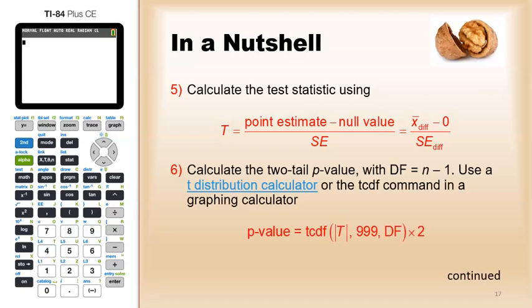From there we would calculate the two tail p-value using the number of pairs minus one as the degrees of freedom. If you're using the tcdf command, that's the tcdf. We enter the absolute value of the test statistic, so if it's negative drop the negative to 999, then the degrees of freedom, then times two.